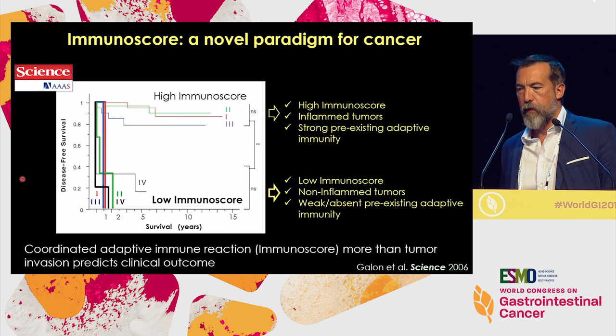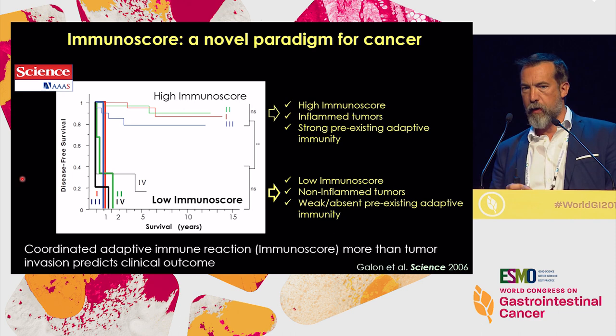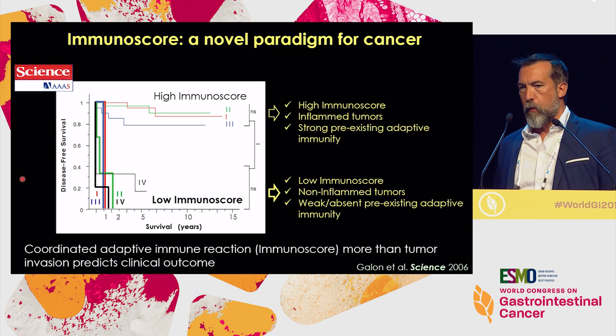In contrast, patients with a low immunoscore do relapse very rapidly. This is happening regardless of the TNM staging system. Patients with an early stage — like stage 1 or 2 — will have very rapid tumor recurrence if they don't have good adaptive immunity. In contrast, patients with immunoscore 4, the highest immunoscore, are protected and will live without tumor recurrence, again regardless of stage.